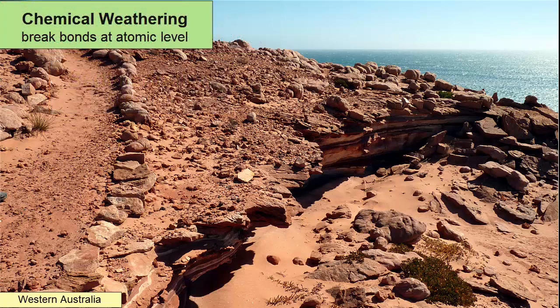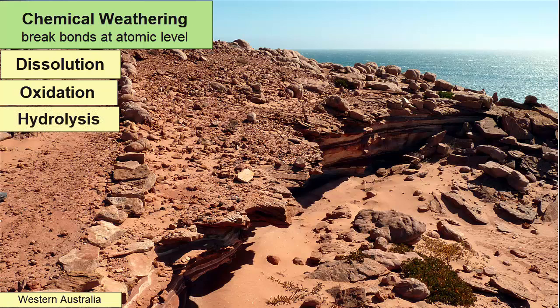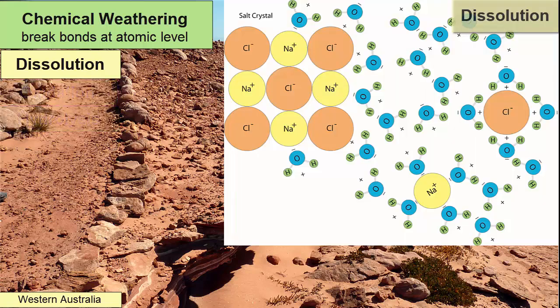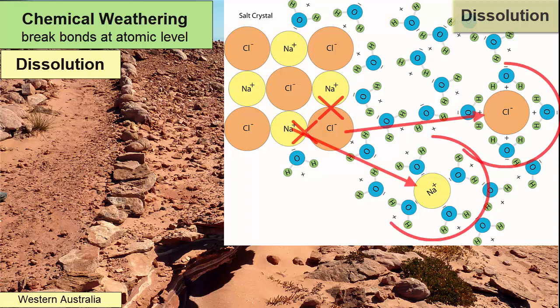Chemical weathering happens when water and atmospheric gases at Earth's surface interact with the surfaces of a rock. Three major types of chemical reactions can occur during those interactions, including dissolution, oxidation, and hydrolysis. Dissolution happens when the atomic bonds in glass or a mineral or shell are broken by water molecules. Polar water molecules will pull apart ions from solid crystals and surround those ions in hydration spheres, which keep the ions separated so they can't recombine. The ions stay dissolved in the water as long as there is enough water to keep them separated.